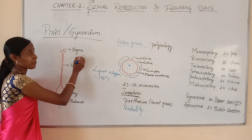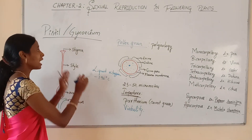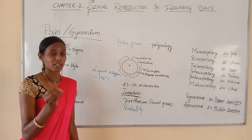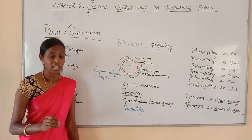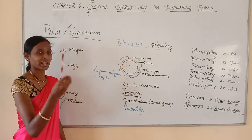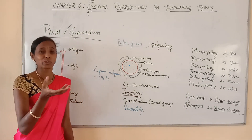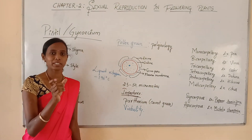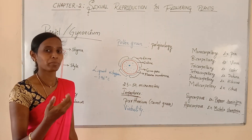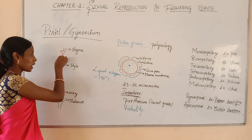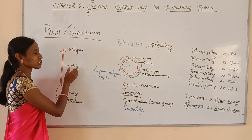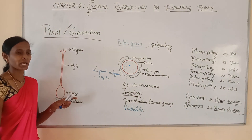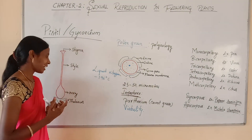The stigma is the terminal expanded part of the flower and serves as a platform for pollen grains, because pollen grains can only germinate on the stigma — on the compatible stigma. The long, elongated slender region is called the style, and the basal swollen part of the pistil is known as the ovary, which is seated on the thalamus.